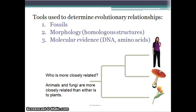Before we talk about the taxonomy and phylogenetics naming system, there are three tools that help us figure out which organisms are more closely evolutionarily related. The three tools are: fossils — basically by looking at fossils, we can see which one comes first, which comes later, and which ones appear at the same time. So they're probably genetically or at least historically related based on the fossil layout.